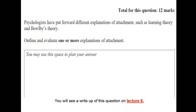Psychologists have put forward different explanations of attachment, such as learning theory and Bowlby's theory. Outline and evaluate one or more explanations of attachment. For this 12-mark question, fully outline one explanation in as much detail as possible, then briefly cover the additional one to show breadth of knowledge. Then do your evaluation using two strengths and one limitation, or two limitations and one strength — three elaborated evaluation points are more than enough. This question will be written up fully in Lecture 8, so look out for that.